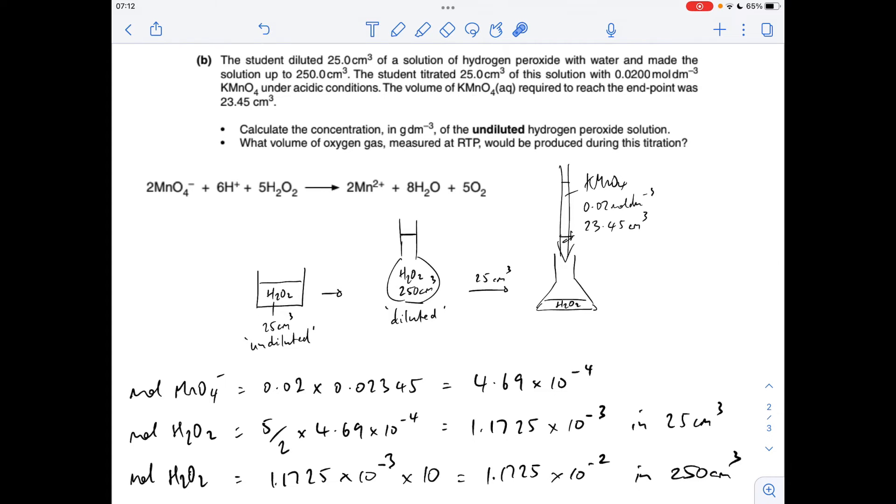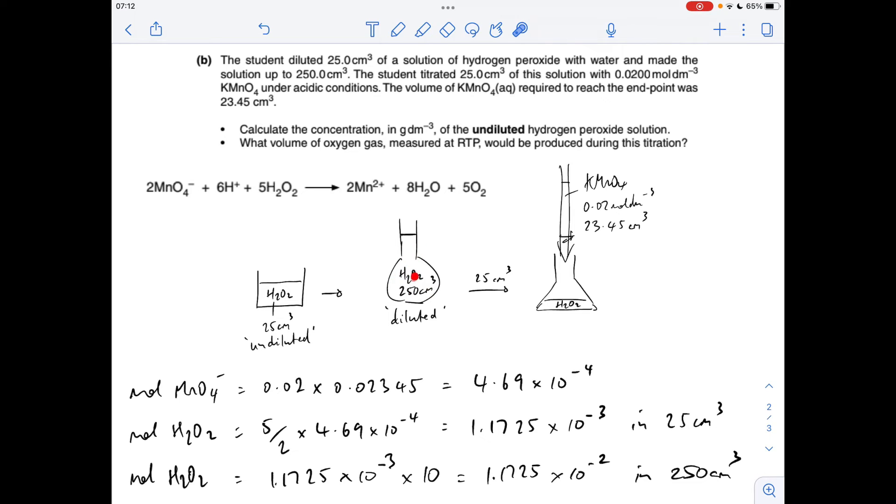Now this is where I think the diagrams come in handy, because if we think about it, we know the moles of hydrogen peroxide in here. How did they get in there? Well, this original 25 cm cubed was poured in there, and then that was made up to 250. So the moles that we've just calculated in here are the moles of hydrogen peroxide in that 25 cm cubed undiluted solution.